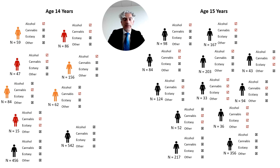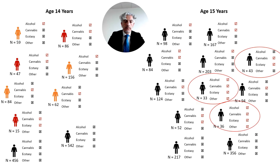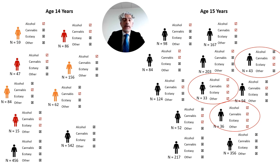Imagine we then ask the same questions a year later to the same adolescents. At age 15, we may notice even more patterns of behaviors. For example, some patterns of behaviors observed here were not present at age 14, and once again we may be interested in classifying individuals into fewer groups that can adequately represent the multiple patterns we observe in the sample.